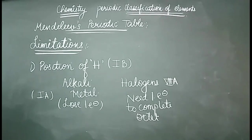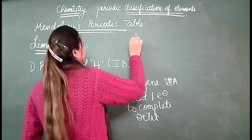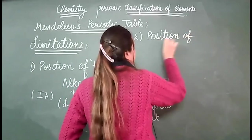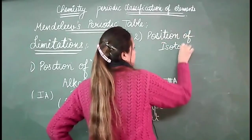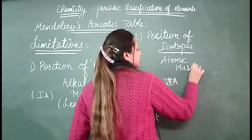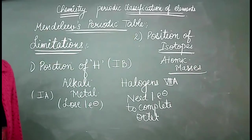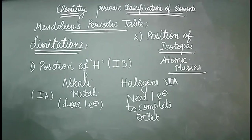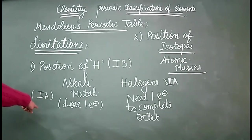Hydrogen was initially placed in group one B. However, it was resembling group one A (alkali metals) and group seven A (halogens). Alkali metals like lithium, sodium, and potassium are in group one A. Halogens are in group seven A. Mendeleev could not determine whether hydrogen was resembling alkali metals or halogens. So the position of hydrogen was not correct — this was the first limitation.